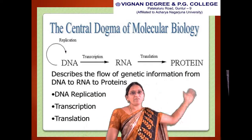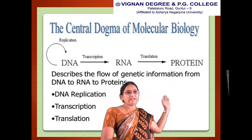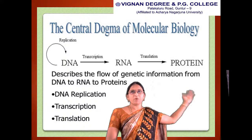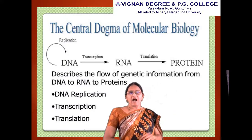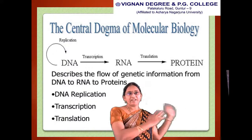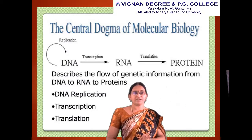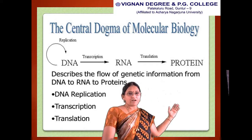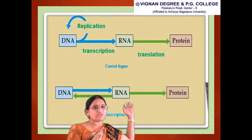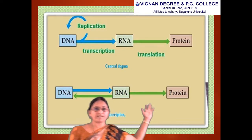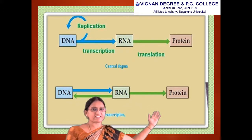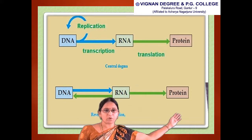Coming to the central dogma of molecular biology: DNA undergoes transcription to synthesize RNA, and from the RNA the protein is translated. The central dogma describes the flow of genetic information from DNA to RNA, and RNA to proteins, involving the steps of DNA replication, transcription, and translation.